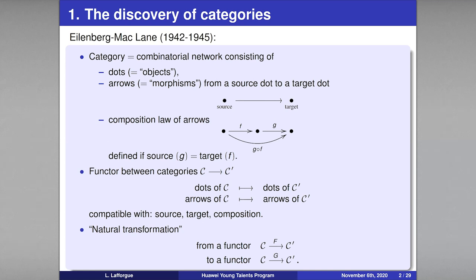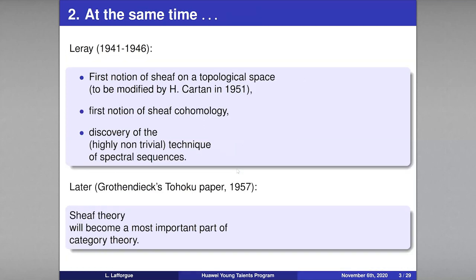The last notion they introduced was a natural transformation from one functor to another. These three notions are, by mathematical standards, very simple. Samuel Eilenberg used to say that the most important paper he wrote later in his career was a paper without theorem, without result, and without proof — just simple definitions.